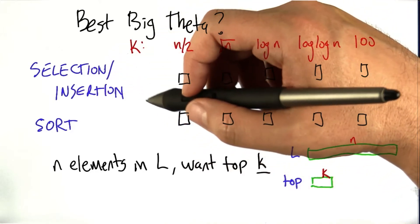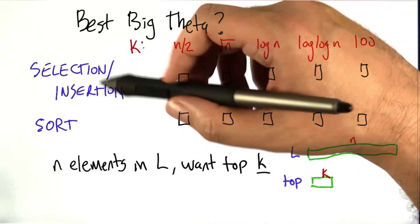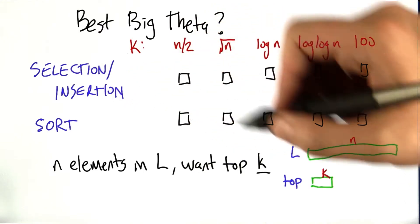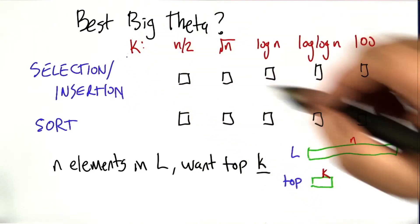It's worth trying to figure out what the running time is asymptotically, big theta, for selection and insertion as a function of n and k, and then we can substitute in the value of k.